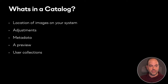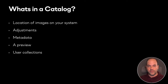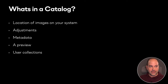A catalog database has five very important things: first, it knows the location of your pictures and how to access them; it contains the adjustments of all your photos; it contains metadata like keywords, shutter speed, and lens used; and it stores user collections. Five very important things stored within that catalog.